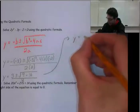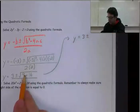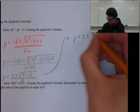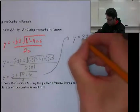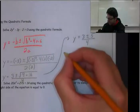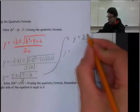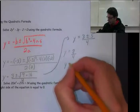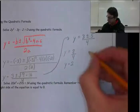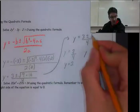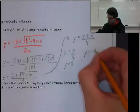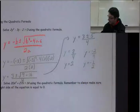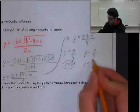So y = 3 ± √25, and the square root of 25 is 5, all divided by 4. This gives us two answers. First, 3 + 5 = 8, and 8 ÷ 4 = 2. That's one possible value. The other is 3 - 5 = -2 over 4, which simplifies to -1/2. So these are your two roots for this equation.